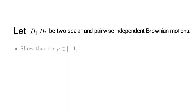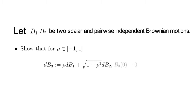Part A: Show that for rho in (−1, 1), dB3 defined as rho times dB1 plus the square root of (1 minus rho squared) times dB2, with B3(0) equal to 0, is a Brownian motion.